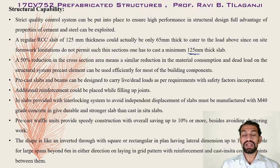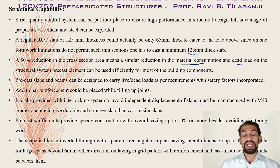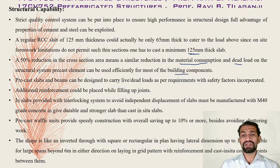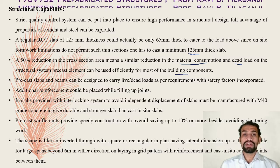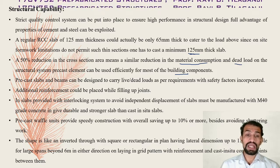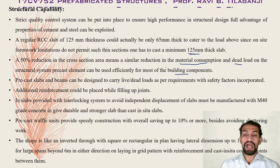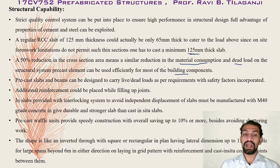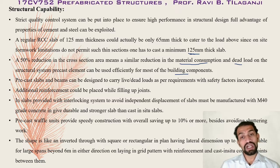A 50 percent reduction in cross-section area means a similar reduction in material consumption and dead load on the structural system. Precast elements can be used efficiently for most building components such as beams, roofs, slabs, columns, window sills, lintels, and door and window lintels. Precast slabs and beams can be designed to carry live load and dead load as per requirements with safety factors incorporated.